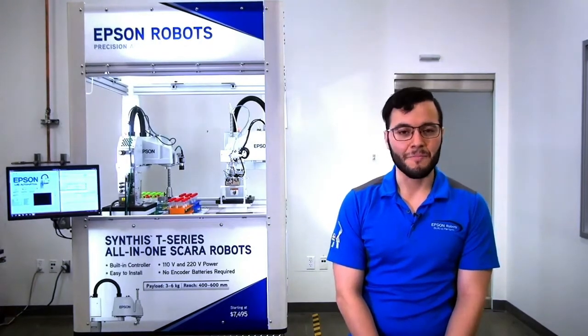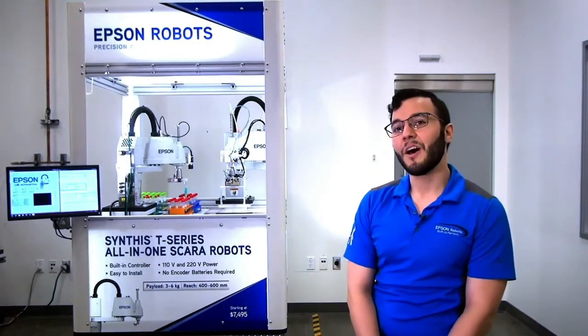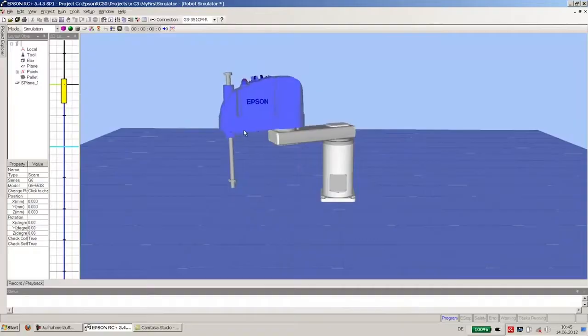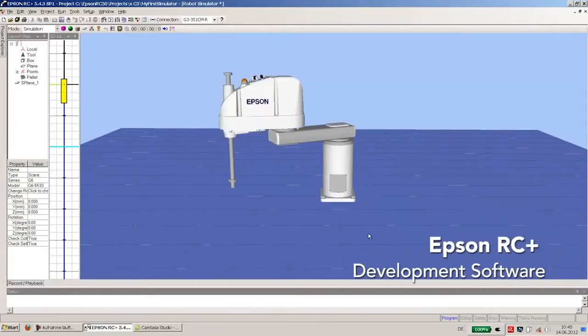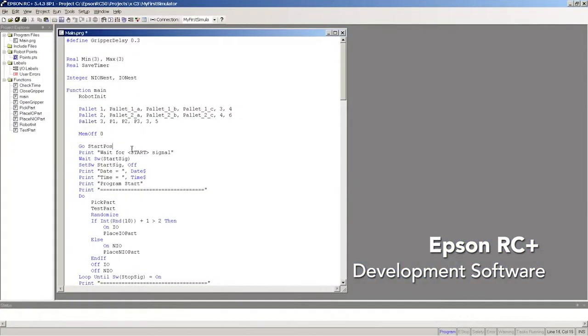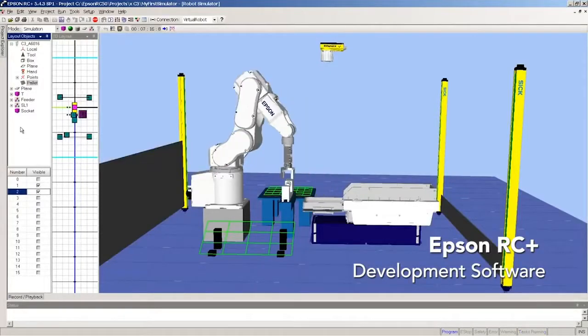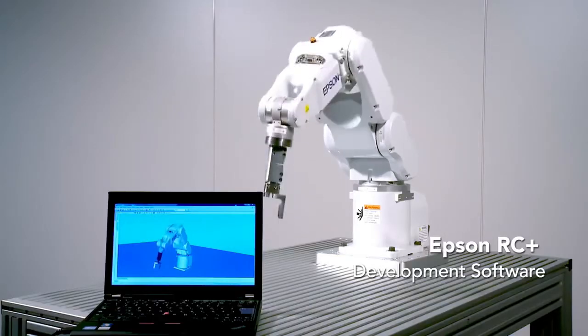This robot line utilizes Epson RC plus 7 software which works with all of Epson's other robots and controllers. The benefit here is that if you learn how to program one of our robots in Epson RC plus 7, then you know how to program them all because all of our robots use Epson RC plus 7.